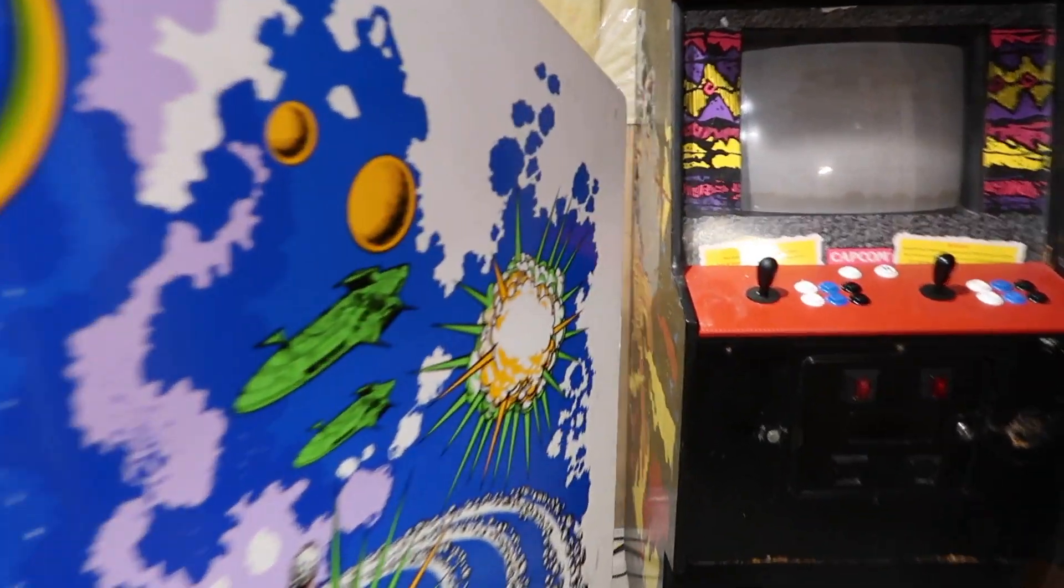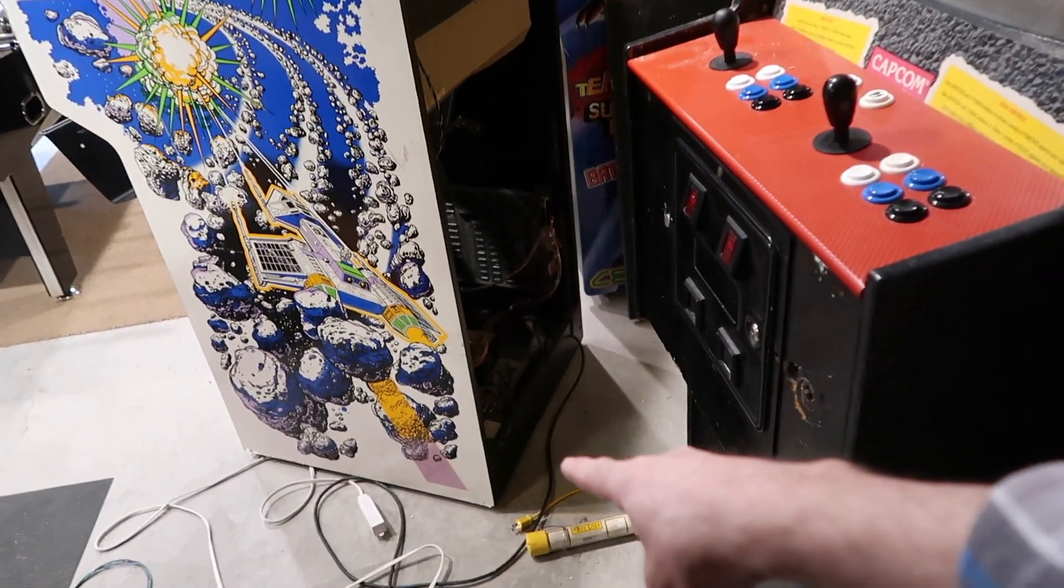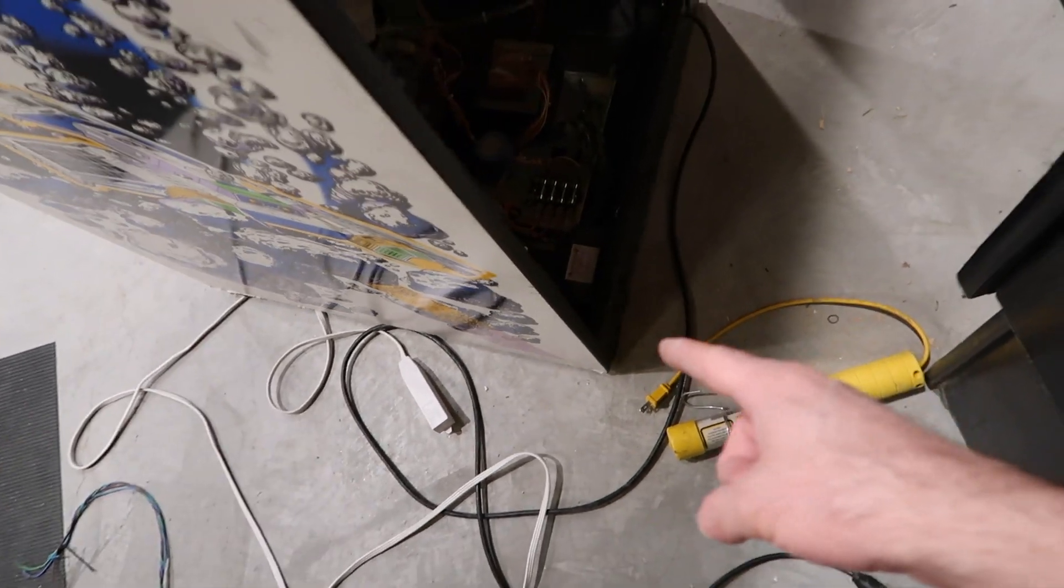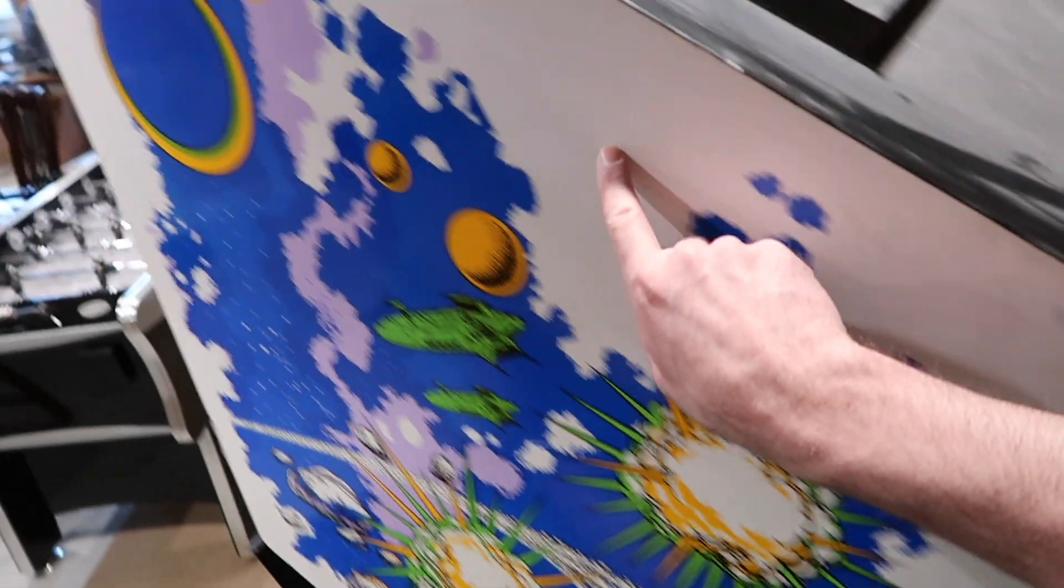All right, today I thought we'd relocate a power switch. This is Asteroids and it has it in one of the worst spots. Right down there in the very bottom back corner where it's totally inaccessible. So what I'm going to do is tap into the power here and put another switch. I'm going to run wires up here.